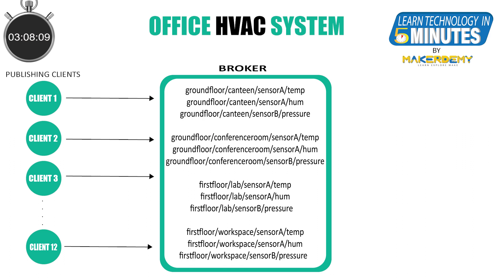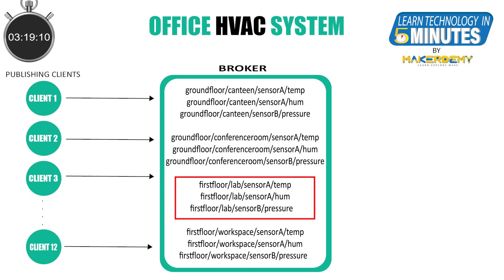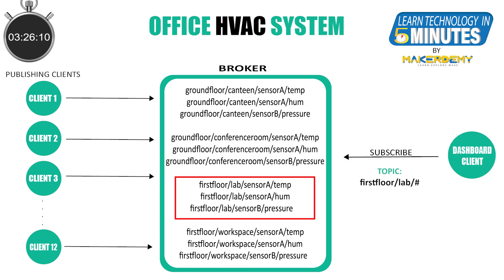Now let's look at the second wildcard. The hash wildcard is a multi-level wildcard which is always placed as the last character in the topic and preceded by a forward slash. For example, to subscribe to all sensor readings of the lab in the first floor, we can use the hash wildcard as shown here. The dashboard client will then be subscribed to all the topics of both sensor A and sensor B in this case.